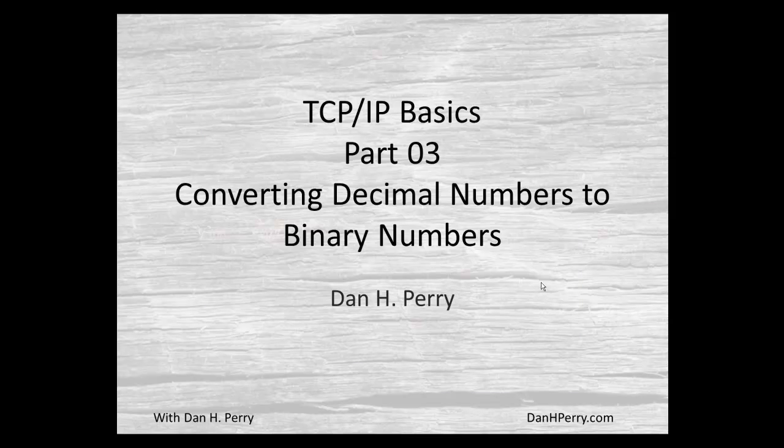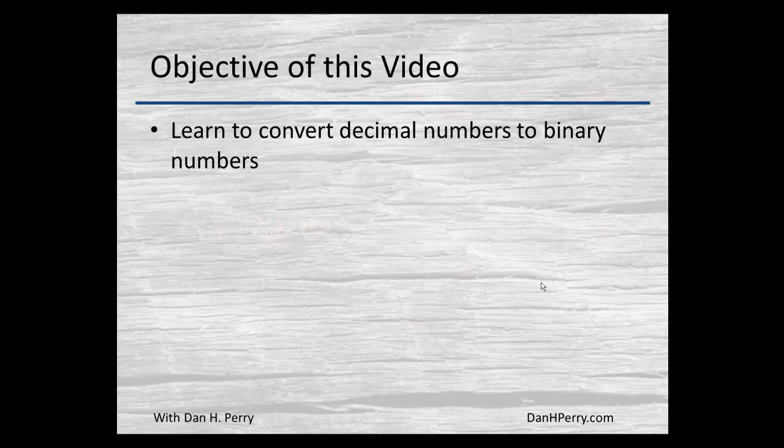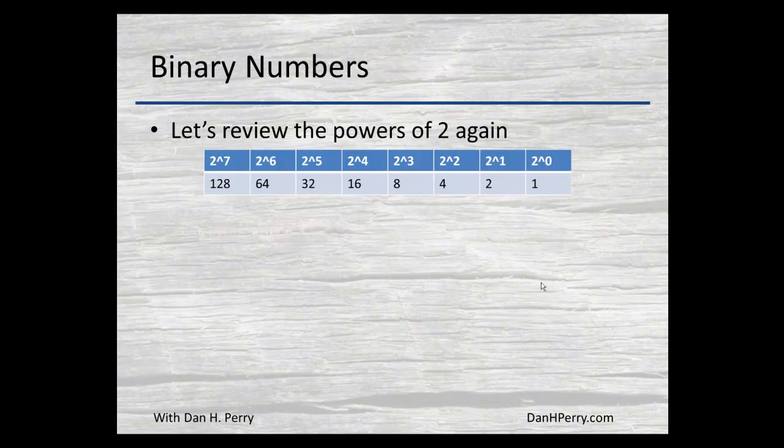Hello, Dan Perry again. TCP/IP Basics Part 3: Converting Decimal Numbers to Binary Numbers. In this video, we're going to learn how to convert decimal numbers into binary numbers. Once again, we need to go back and look at the powers of 2. Remember, starting at the least significant bit on the right, it's 2 to the zero or 1, 2, 4, 8, doubling each time.